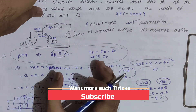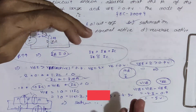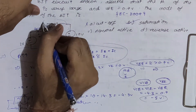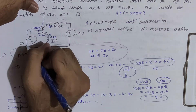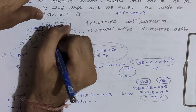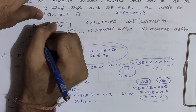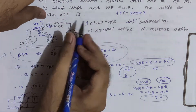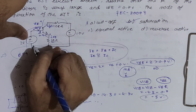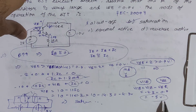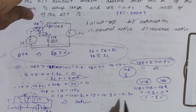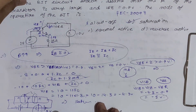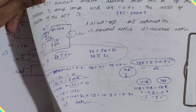A shortcut: instead of finding VCE first, you can apply KVL directly on the collector-base loop to get VCB = −5V directly, reducing the number of steps. Let's now see another problem to better understand this approach.